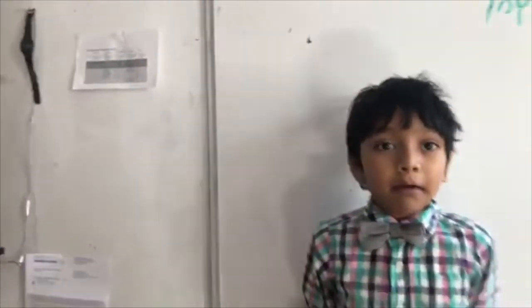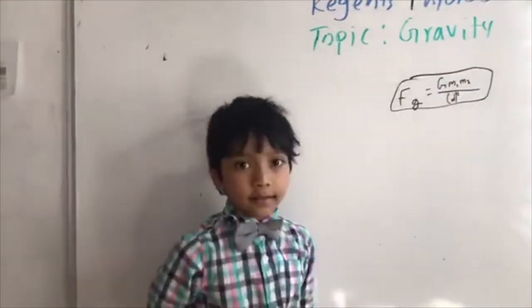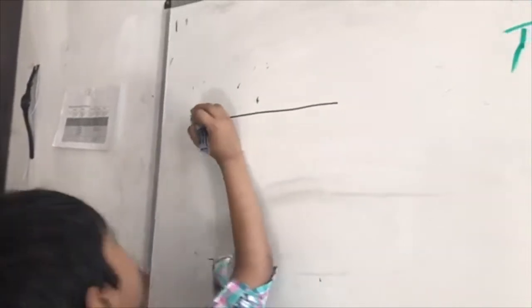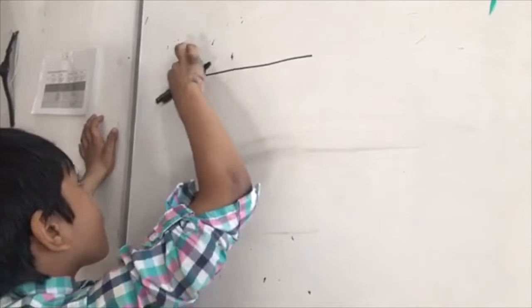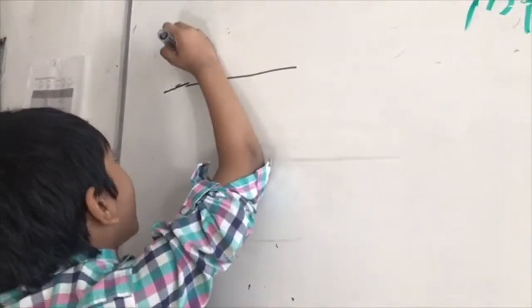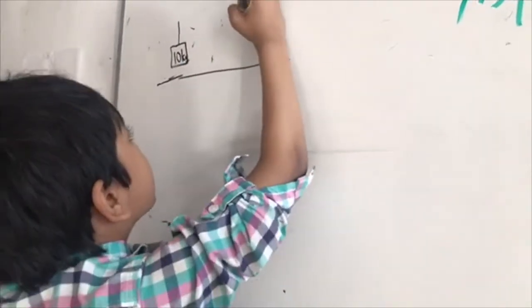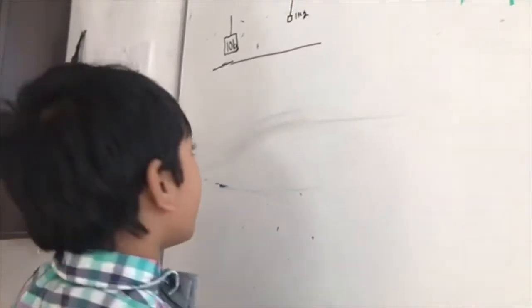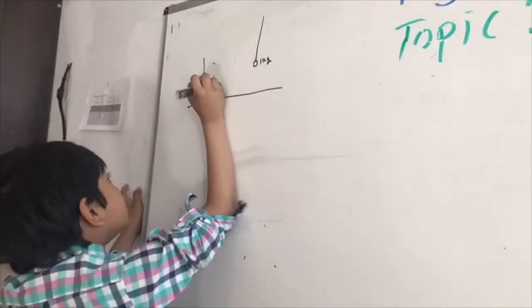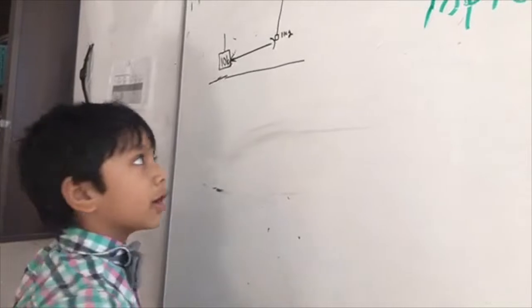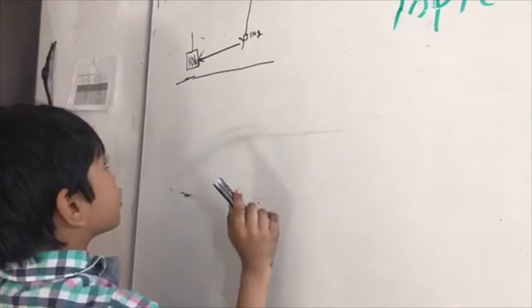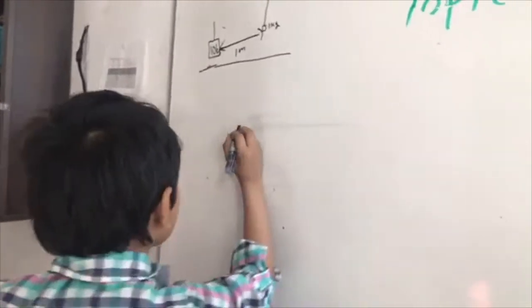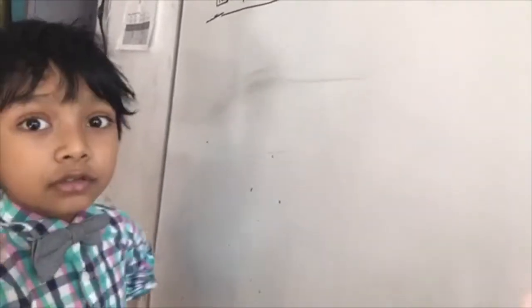Now I'm going to give you three examples of this equation. Let's start from our first example. Let's say we have a 10 kilogram object and a 1 kilogram object. And the distance between them is 1 meter. This diagram is not drawn to scale. Let's just assume that. Now, we want to find the force of gravity.